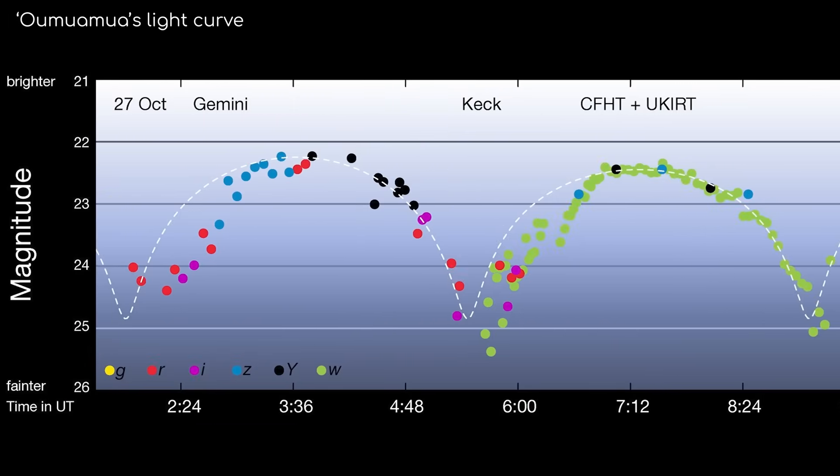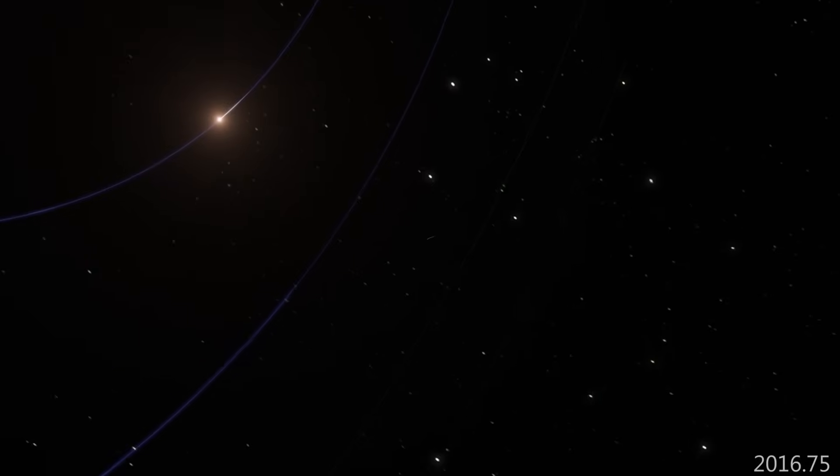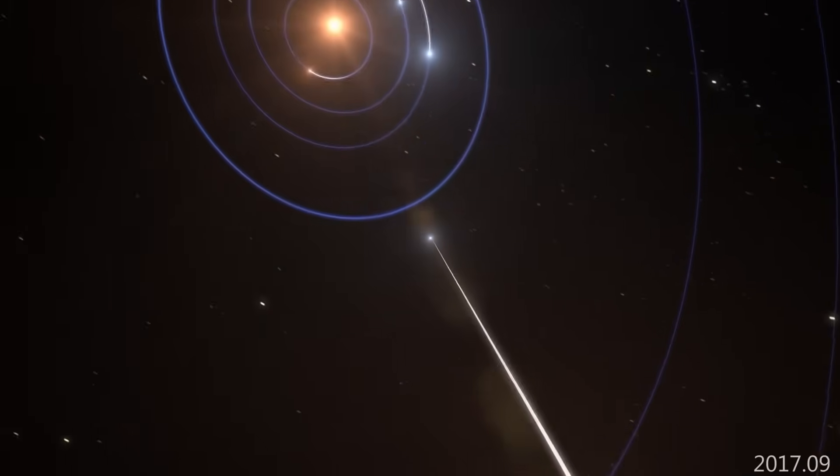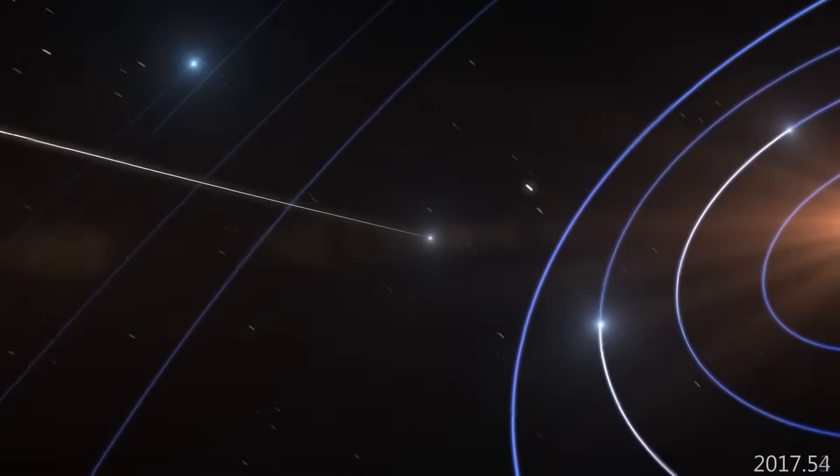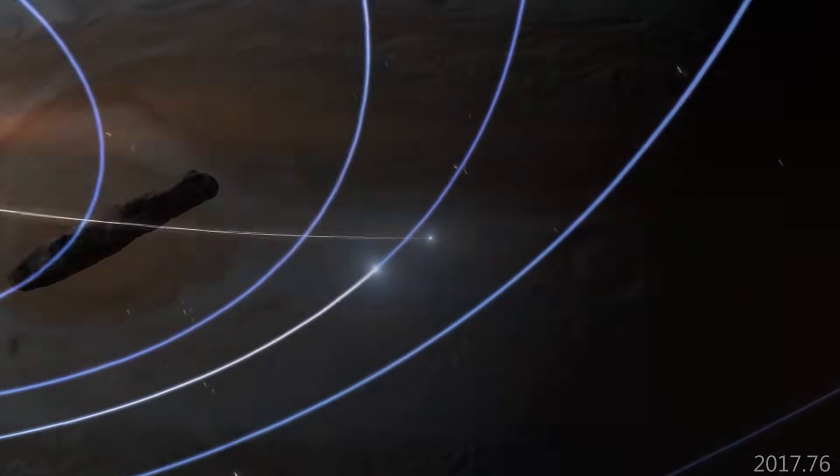Which means Aomuamua wasn't circling the sun. It was passing through. It came from the stars. It was the first confirmed interstellar object ever observed in our solar system.